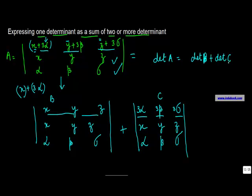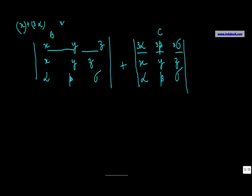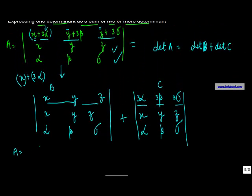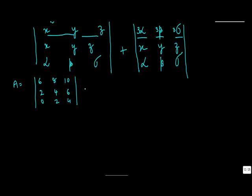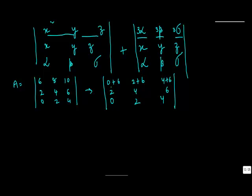Let's take an example to prove this. Say A has first row 6, 8, 10; second row 2, 4, 6; and third row 0, 2, 4. This can also be written with the first row as: 0 plus 6, 2 plus 6, and 4 plus 6, with second row 2, 4, 6 and third row 0, 2, 4. So the first row has been expressed as x₁ plus y₁, x₂ plus y₂, x₃ plus y₃.